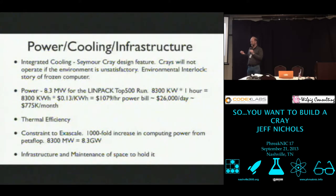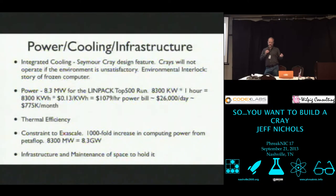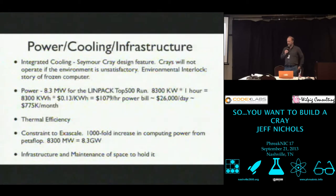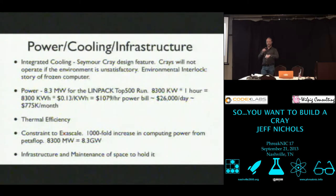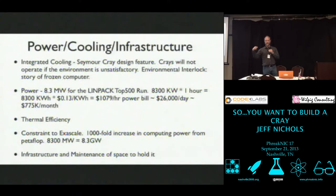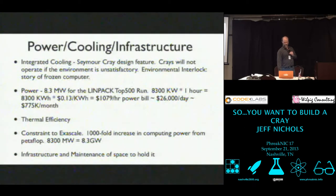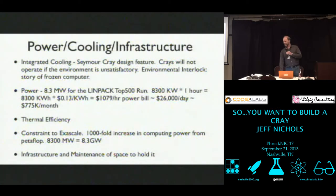What has become much more concerning and important is thermal efficiency — how much computing are you getting per watt of power used? Titan actually ranks number two or three on that list, so it is very efficient, but it's huge. Power is really also a constraint to exascale. What comes after petascale? Exascale — an exaflop is a thousand-fold increase over a petaflop. If you just scaled all your numbers, you'd need 8.3 gigawatts — that's multiple nuclear power plants to power one computer. So there's a lot of costs: maintenance, all the space, all that stuff. People often ask why'd you have to retire it, why'd you have to turn it off.